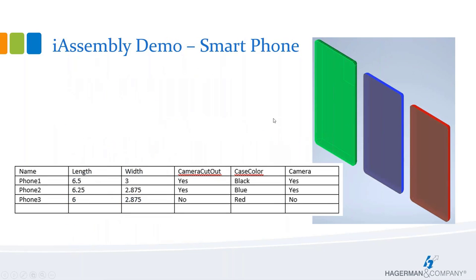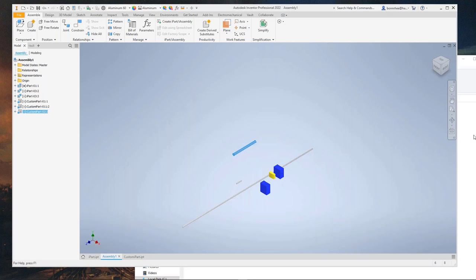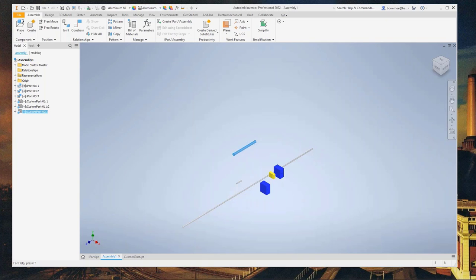For this demo, I created a simple smartphone containing three parts: a cover, a glass screen, and a camera. You can see the cutout on one version where the camera would go. This is the table I'll be using for our demo. I'll open the smartphone assembly — a regular assembly that we want to turn into an iAssembly. You can see the three parts: a fictitious camera, an aluminum case, and a glass screen.